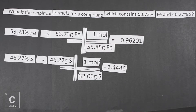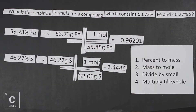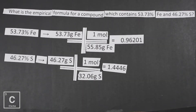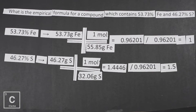That takes care of mass to mole. Now we're going to divide by small — look at the answers, find the smallest one, and divide both by it. The smallest here is 0.96201, so we divide both answers by that. This forces one element to equal one — that's the whole point, we're trying to find a ratio. The other comes out to 1.5. We don't round until the very, very end.